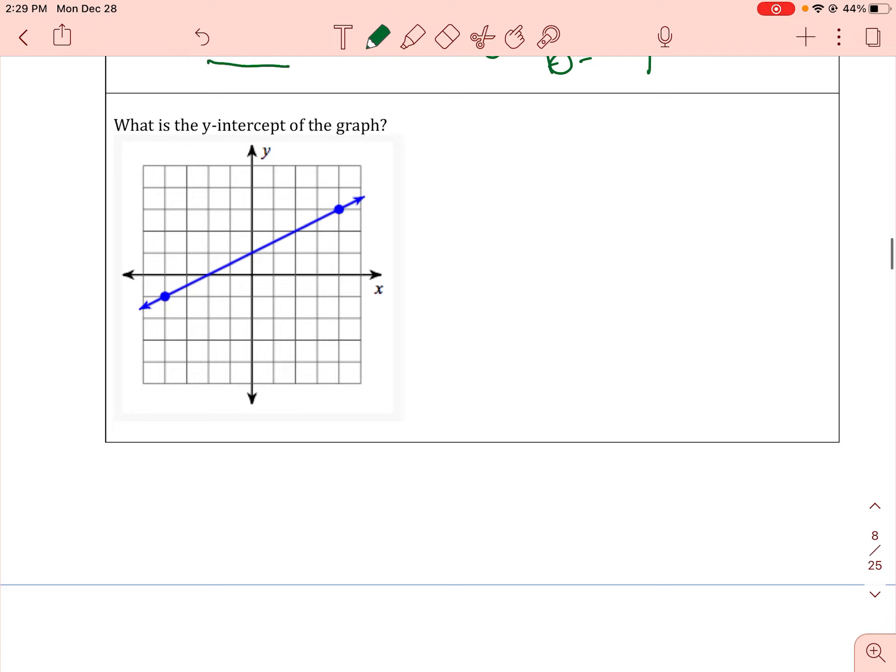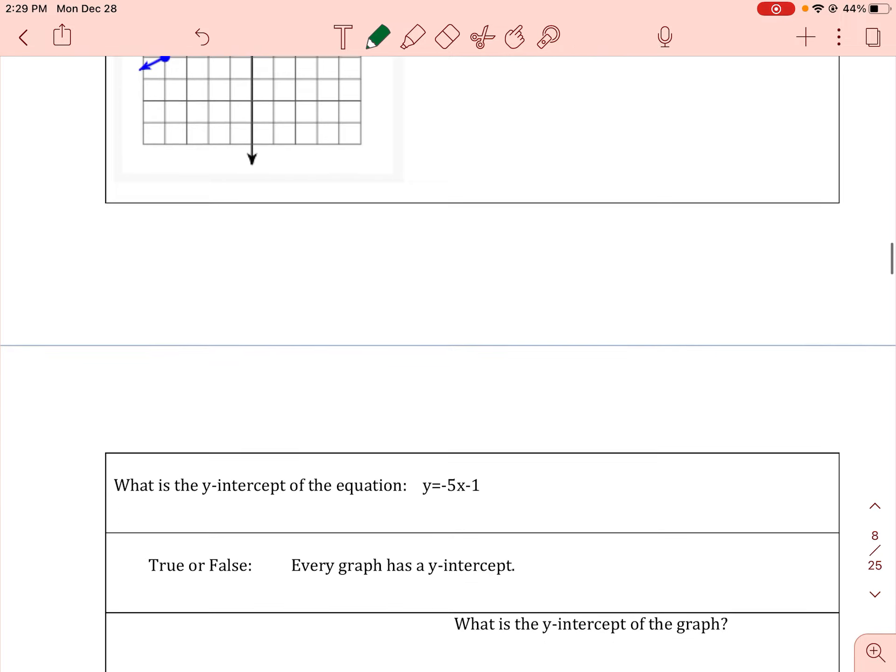Here, what is the y-intercept of the graph? So b equals - let's look and see where the blue line crosses the y-axis. I see right there is where it crosses, and that would be at 1 on the y-axis because you go up 1. There is your y-intercept, there is your b.